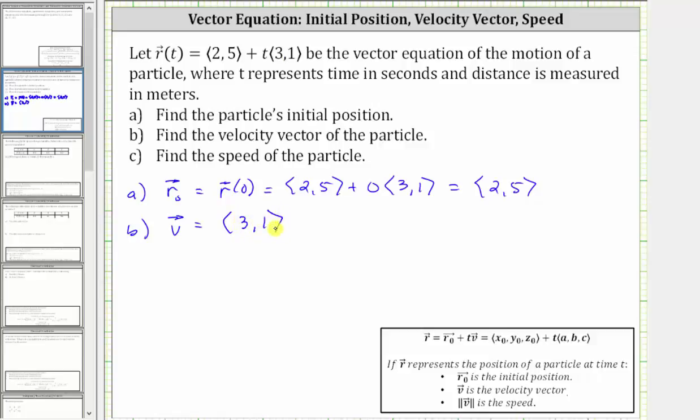And then finally part c, the speed is equal to the magnitude of the velocity vector, which is equal to the square root of three squared plus one squared, which is equal to the square root of ten, and the units for the speed will be meters per second.